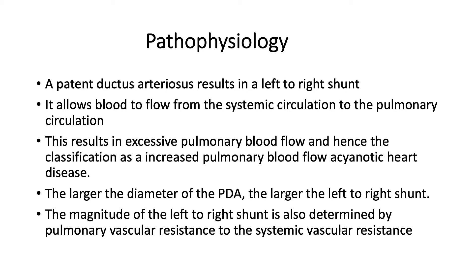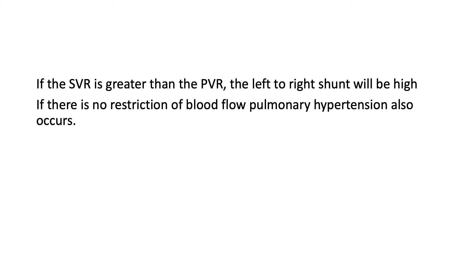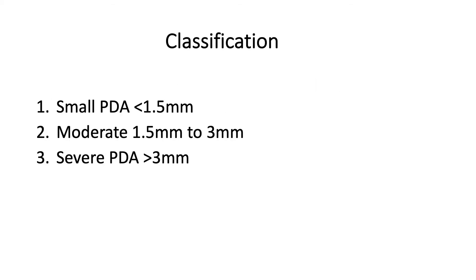The larger the diameter of the PDA, the larger the left-to-right shunt. The magnitude of the shunt is also determined by the pulmonary vascular resistance relative to systemic vascular resistance. If the SVR is greater than the PVR, the left-to-right shunt will be larger. If there is no restriction of blood flow, pulmonary hypertension may also occur. In terms of size: a small PDA is less than 1.5 mm, a moderate one is 1.5 to 3 mm, and a severe PDA is greater than 3 mm.